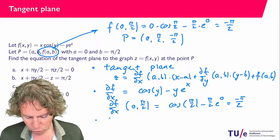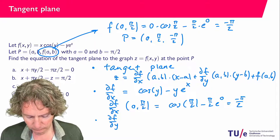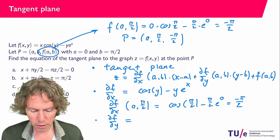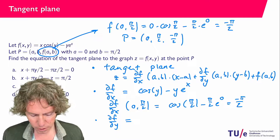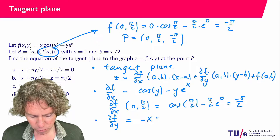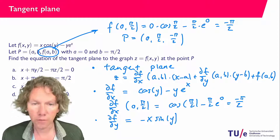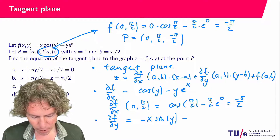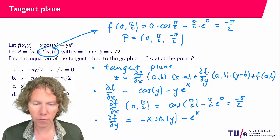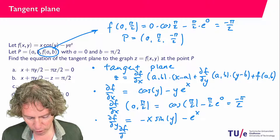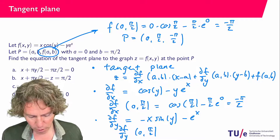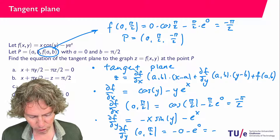Now let's compute df/dy. We differentiate the function with respect to y, treating x as a constant. We get minus x times sine of y — because the derivative of cosine is minus sine — minus e to the power x, since the derivative of y is 1. Plugging in x equals 0 and y equals pi over 2, we find minus 0 minus e to the power 0, which equals minus 1. So df/dy at (a, b) equals minus 1.